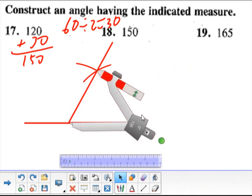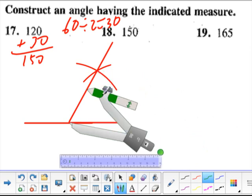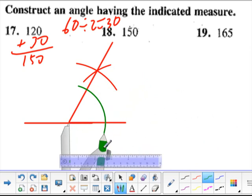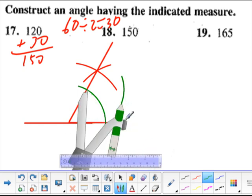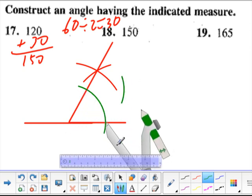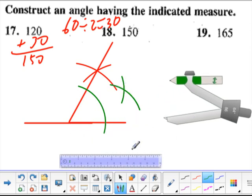So how do I bisect an angle? Let me change colors here so it's easier to follow. I'm going to open up to an arbitrary radius. Remember, this is just really constructing a rhombus. And then go to that intersection point, make an arc. Go to that intersection point, make an arc.